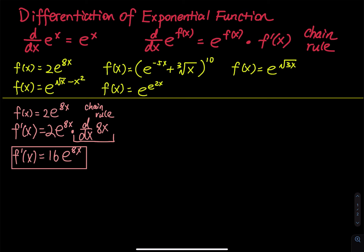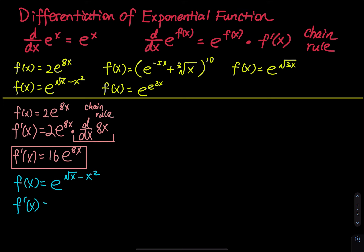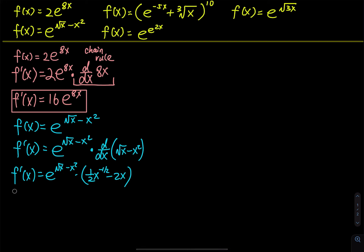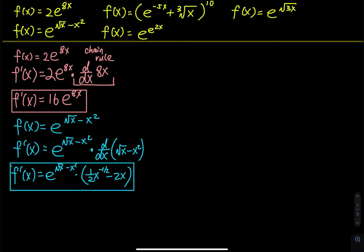The next example is f(x) = e^(√x − x²). So f′(x): first copy the whole thing — e^(√x − x²) — and then, since we have that expression inside the exponential, use the chain rule to differentiate it. That gives e^(√x − x²) times (½·x^(−½) − 2x). This is the final answer.